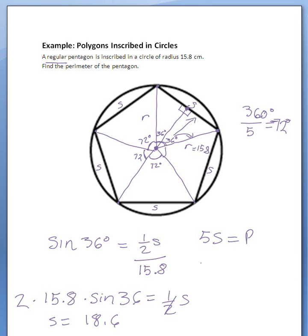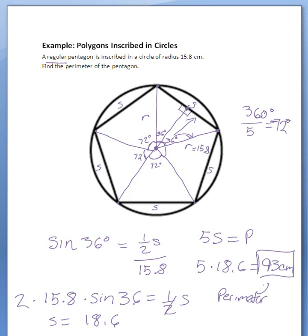So let's multiply 5 times 18.6, and that will give you 93 centimeters. And that is the length of the perimeter. And we're done.